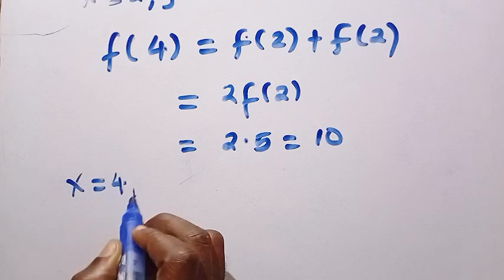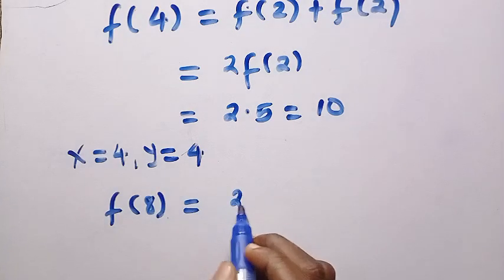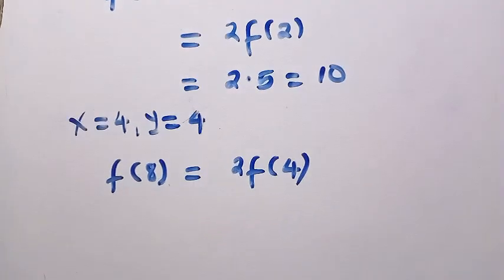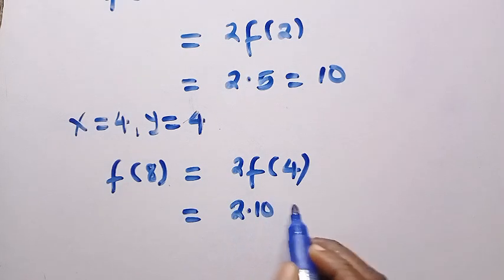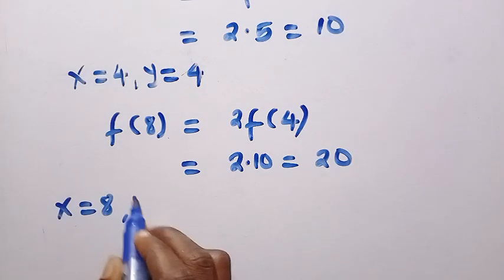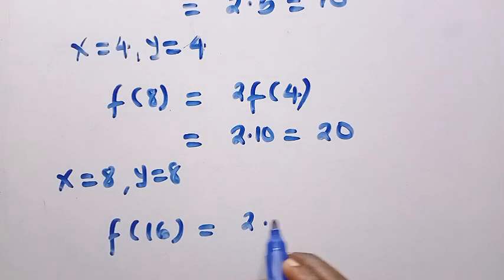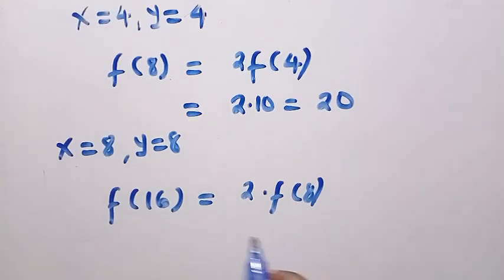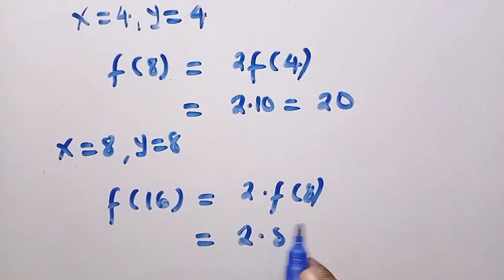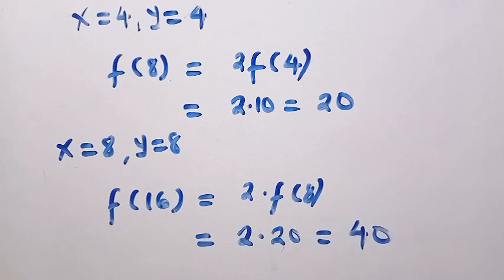Next, setting x equal to 4 and y equal to 4, we get f of 8 equals 2 times f of 4, which is 2 times 10, giving us 20. Then, setting x equal to 8 and y equal to 8, we get f of 16 equals 2 times f of 8, which is 2 times 20, giving us 40. So f of 16 equals 40. We get the same answer using both methods. Thanks for watching, and see you in the next video. Bye-bye.